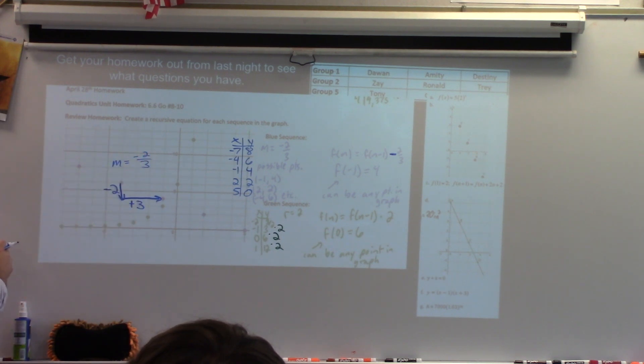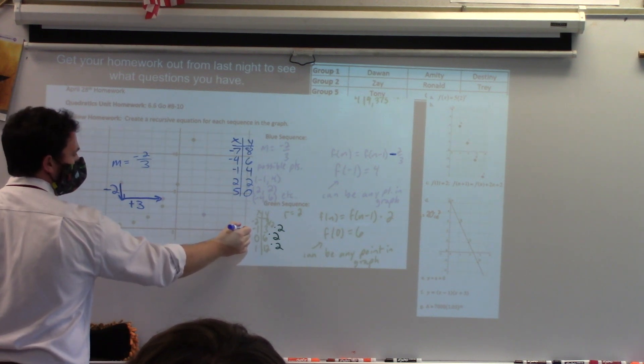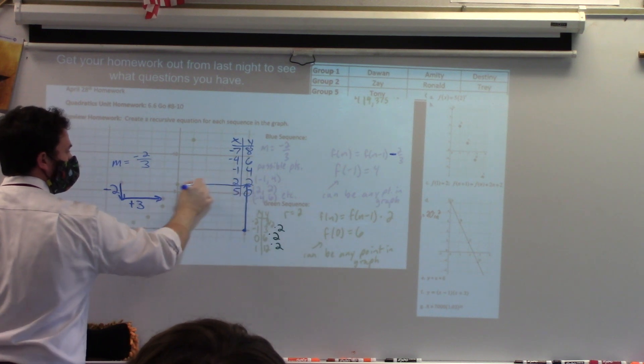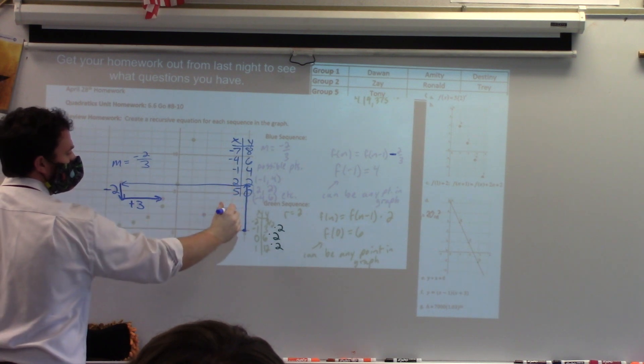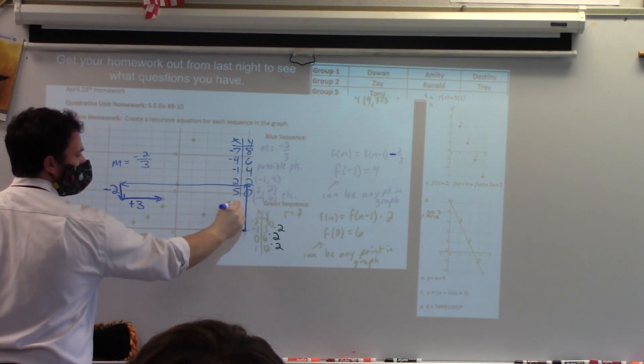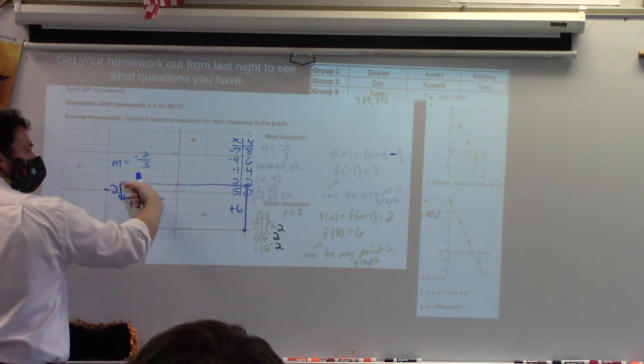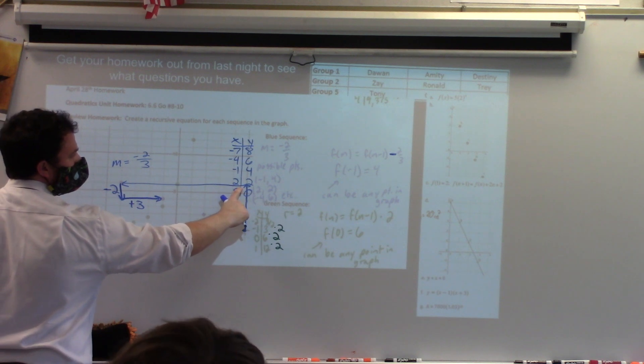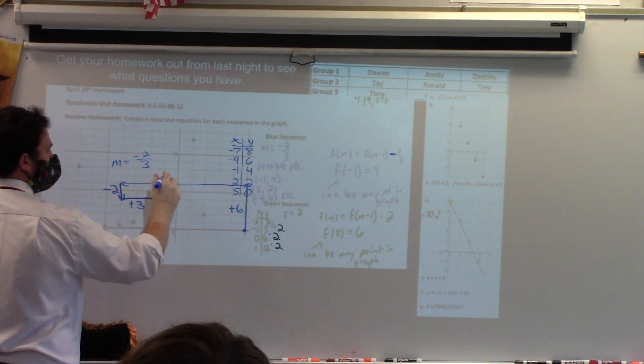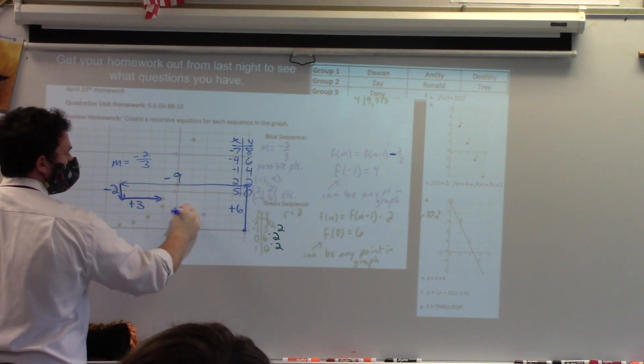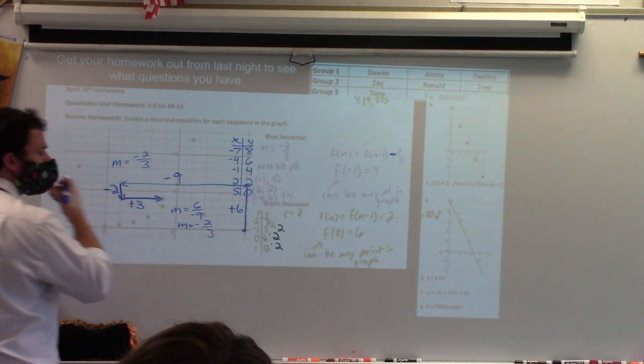Now, that's just the way I chose to do it. You can pick any two points on here. In fact, I could have gone from this point up and to the left, and it would have still given me the same slope. Now, I'm going up one, two, three, four, five, six. And, because I'm going up, it is positive. And then, because I'm going to the left, it is negative. One, two, three, four, five, six, seven, eight, nine. Divide both of those by three, you'll get negative two-thirds.